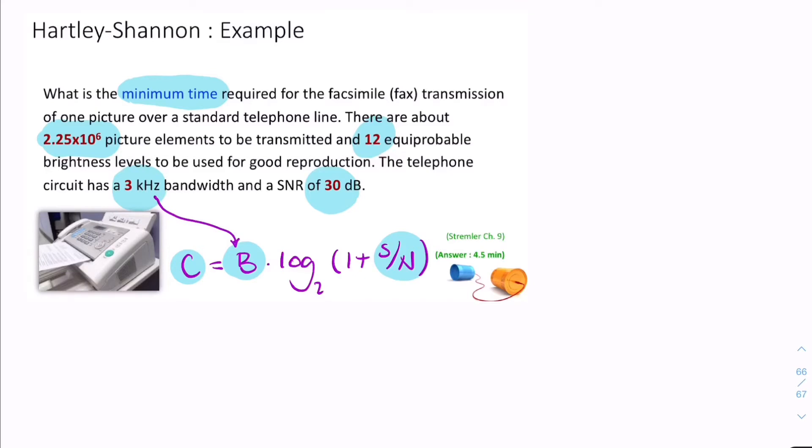The signal-to-noise ratio in decibels is 10 log to the base 10, the signal-to-noise ratio, as a unitless power ratio. So, S over N is 10 to the power SNR divided by 10. So that's 10 to the power 3, which is 1,000. So that 1,000 goes in there.